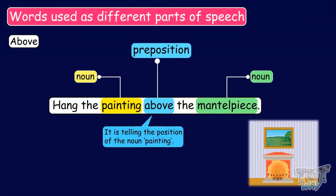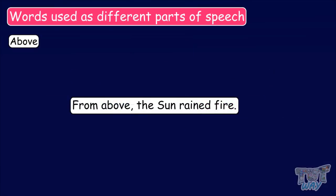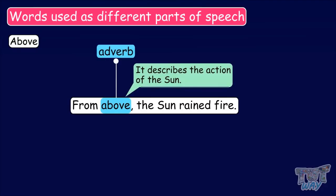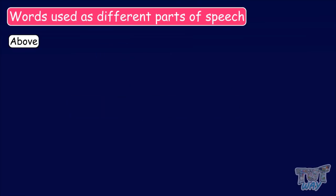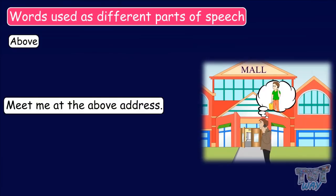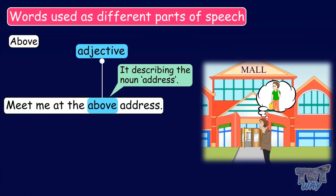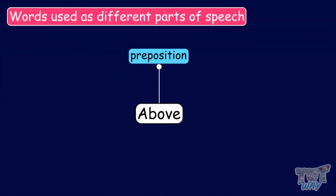But it can also be used as an adverb and an adjective. From above, the sun rained fire. Here, the word above is being used as an adverb as it describes the action being done by the sun. Now let's use it as an adjective: Meet me at the above address. Here, the word above is being used as an adjective as it is describing the noun after it. So, the word above can be used as a preposition, as an adverb, and as an adjective.